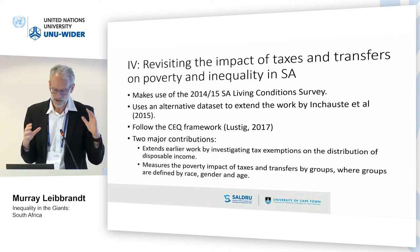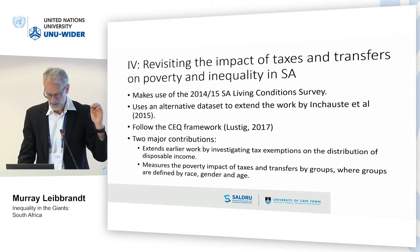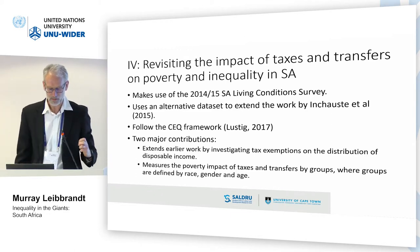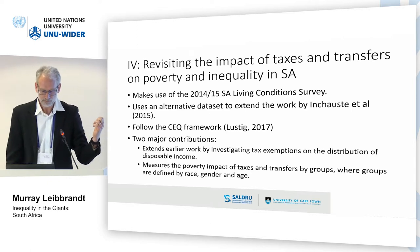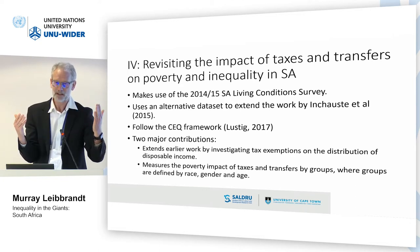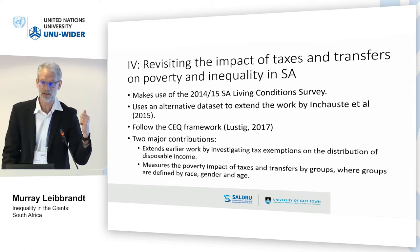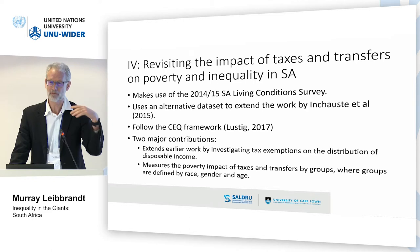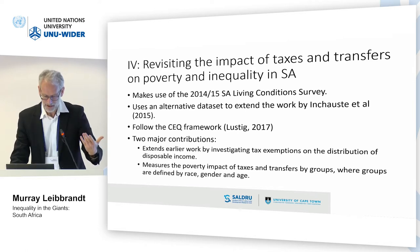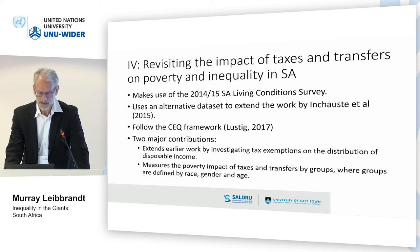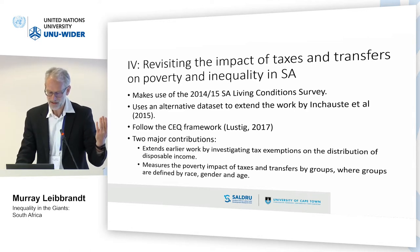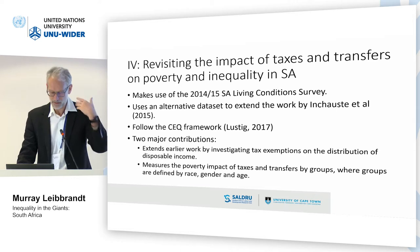Our country studies then closed with a fourth paper — again by Ingrid Willard, co-authored with Mashekwe Maboshe, one of our young PhD students in the School of Economics — that does a benefit incidence type exercise. These have been done before; we updated to a more recent year using something called the Community Survey and Living Conditions Survey, made publicly available by our stats agency. The two key contributions are the extension to more recent data, and a focus on issues not previously explored: tax exemptions in the distribution of disposable income.